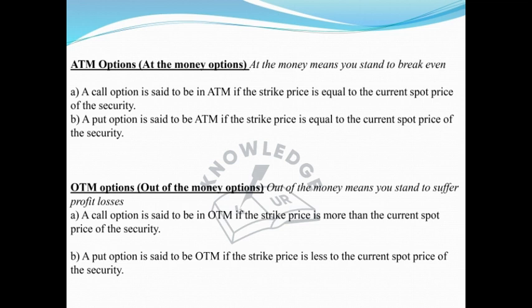The next is ATM option — at the money option. At the money means you stand to break even. At the money option can be of two types: a call option and a put option. A call option is said to be ATM if the strike price is equal to the current spot price of the security.